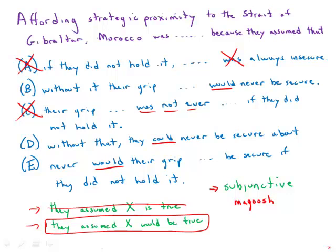Answer choice B says 'without it, their grip would never be secure' — that is reasonably direct and clear. Answer choice D says 'without that...they could never be secure about it,' which is a strange, indirect way to word it. So D is out.